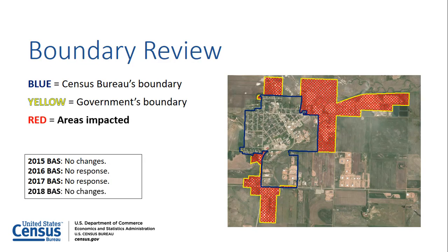In 2018, the new BAS contact did not review the current boundary data the Census Bureau had on file prior to completing the Annual Response Form. Since there were no annexations on file within the government's records for that year, they reported no changes. Because the government did not review the current boundary data on file before reporting no changes to the 2018 BAS, the areas shaded in red were not included in the Census Bureau's representation of the government's boundary. This affects the government's housing and population count and affects the allocation of federal funding to this community.